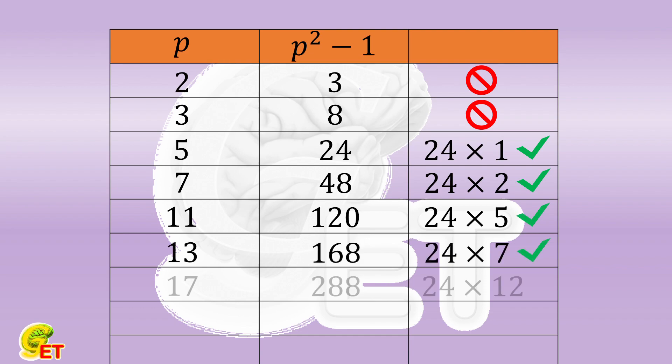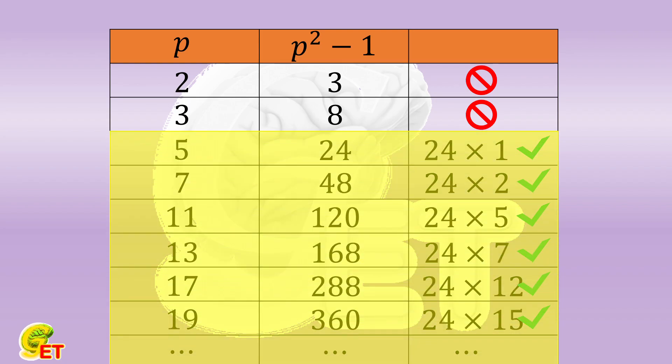Let's list a few more, and we can find they all work. So it looks like, if the prime number p is not smaller than 5, the square of p minus 1 is always divisible by 24. What task is left then is only to prove this observation.